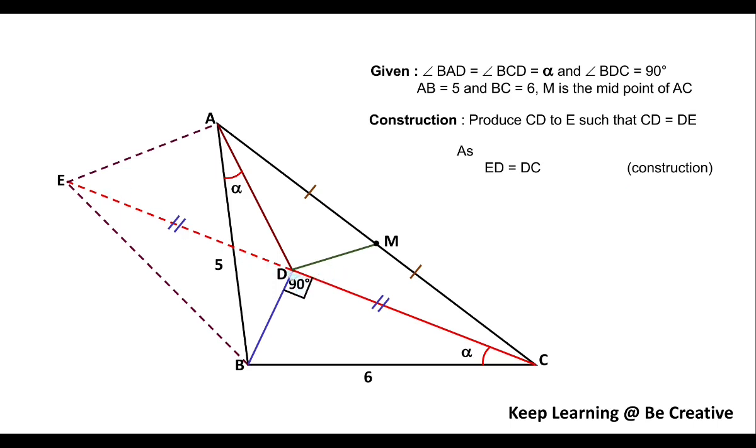Now as here we can see that we have ED equals DC by construction. Then we have angle CDB equals angle EDB because this is a straight line. So definitely by linear pair, angle BDE will also be 90 degrees.